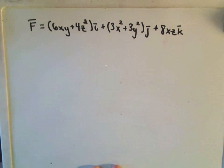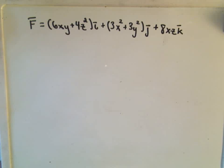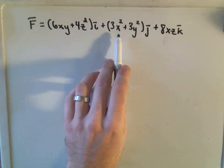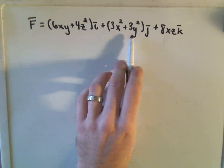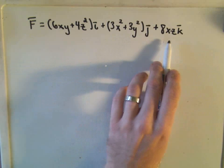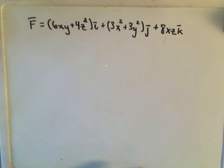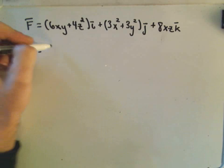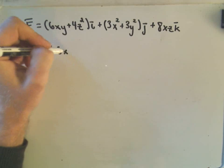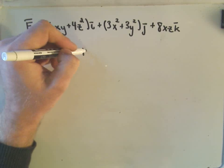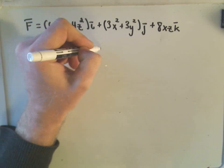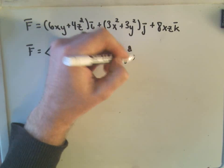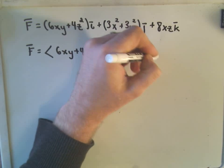Suppose we have the vector field given by (6xy + 4z²)i, (3x² + 3y²)j, and 8xz k. We can rewrite that as the components: 6xy + 4z², 3x² + 3y², and 8xz.